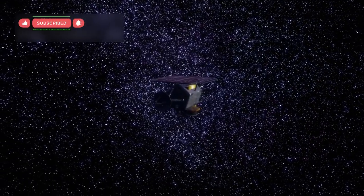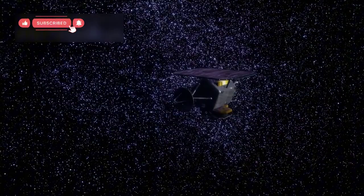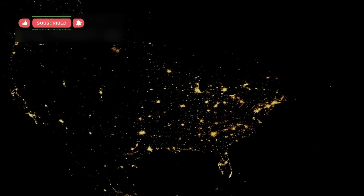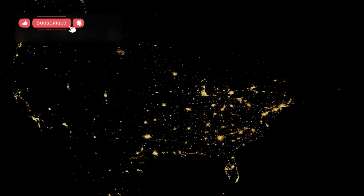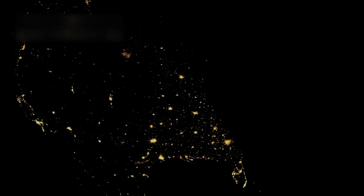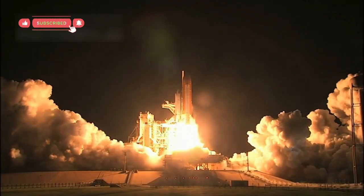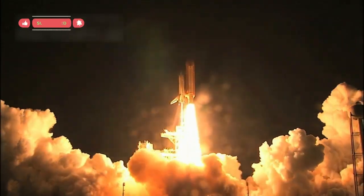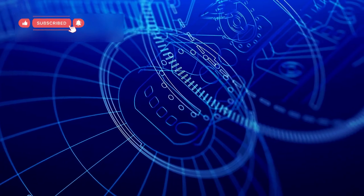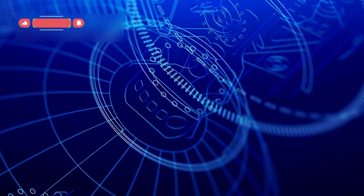Voyager 1 now faces serious challenges. Its radio messages take almost 19 hours to reach Earth, and its power source grows weaker every year. NASA has turned off many non-essential systems, keeping only the critical instruments running. Yet the spacecraft still sends valuable information, proving how well it was built.